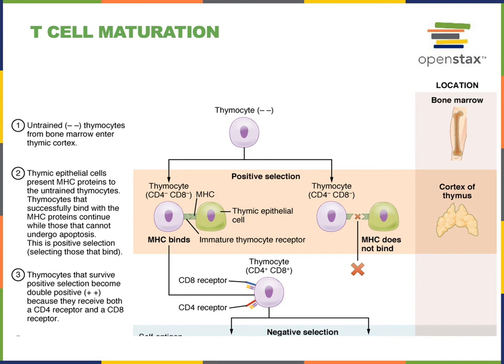In this process, thymocytes will be stimulated to produce two cell surface proteins known as CD4 and CD8. If a thymocyte's T cell receptor cannot bind to the MHC protein on the surface of a thymic epithelial cell, that thymocyte will be stimulated to enter apoptotic cell death. In this mechanism of positive selection, only thymocytes with functional T cell receptors capable of binding to MHC proteins will be able to progress through positive selection and move on to the next step of T cell maturation known as negative selection.